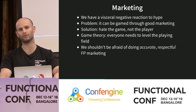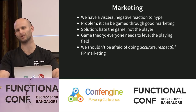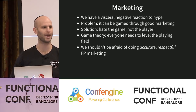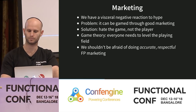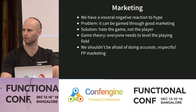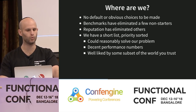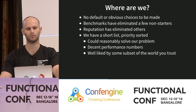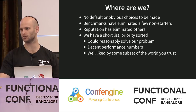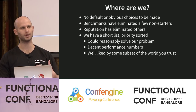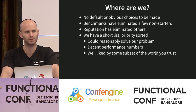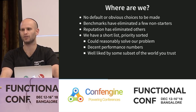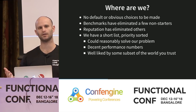One of the things we're going to need to do in the functional programming community is do a little bit of this marketing — but we have to do it correctly. We can't go out there and make false or crazy claims. We have to be accurate and respectful. So we know we have no default or obvious language choice, we've eliminated a few that are too slow, we've let reputation eliminate some others, and we've come up with a short list of five languages that could reasonably solve our problem.